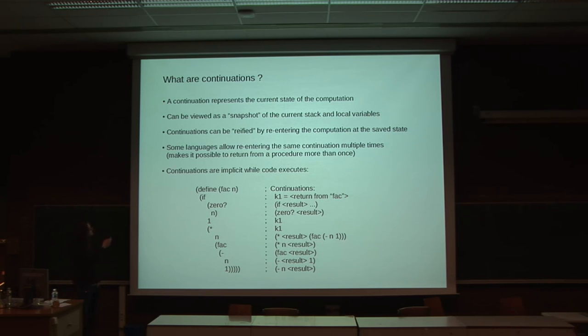Here I have an example that attempts to show where the continuation is, what it represents while code is executing. This is scheme code now, a function definition of the very well-known factorial function. In every position, in every place in the computation, there is an implicit continuation that represents what happens next. In the conditional here, you have the continuation that represents what happens when the function returns. As the expressions nest and the code executes, the results are used.